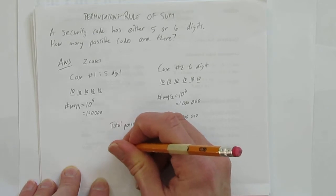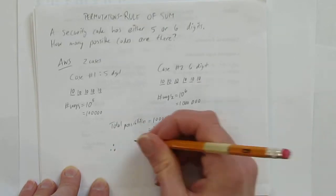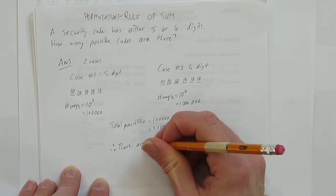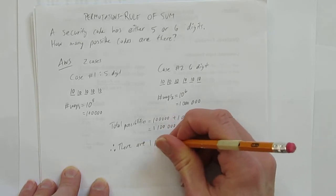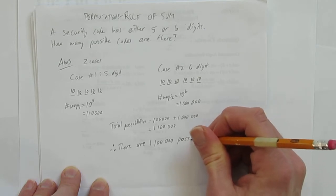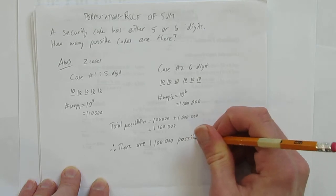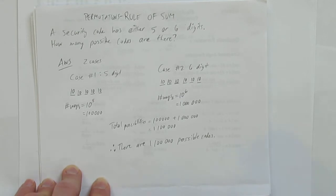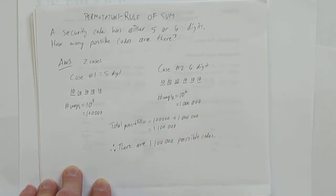It's a word problem, so we need a word answer. Therefore, there are one million, one hundred thousand possible codes. We've done a permutation problem using the rule of sum — we created two separate cases based on the word problem and then added those two cases together.